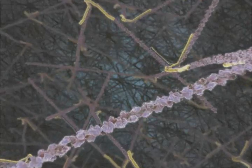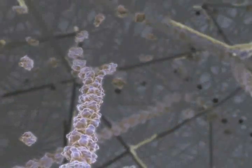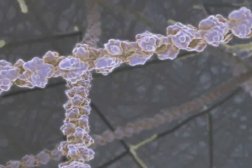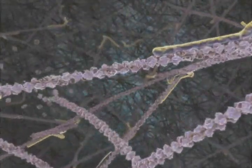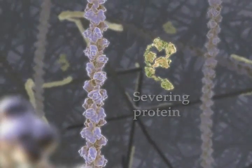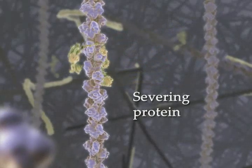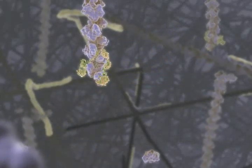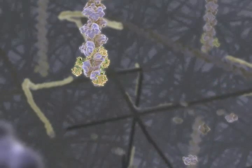Filaments, capped at their minus ends by a protein complex, grow away from the plasma membrane by the addition of actin monomers to their plus end. The actin network is a very dynamic structure, with continuous directional polymerization and disassembly. Severing proteins induce kinks in the filament and lead to the formation of short fragments that rapidly depolymerize or give rise to new filaments.